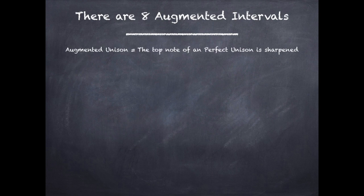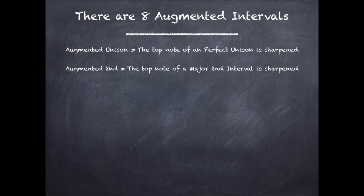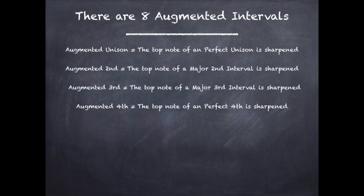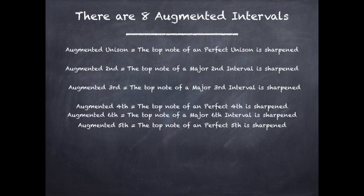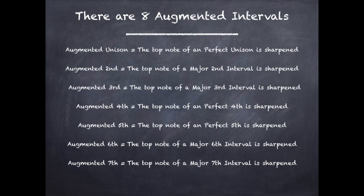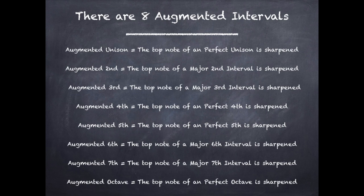An augmented unison: the top note of a perfect unison is sharpened. An augmented second: the top note of a major second is sharpened. An augmented third: the top note of a major third is sharpened. Augmented fourth: the top note of a perfect fourth is sharpened. Augmented fifth: the top note of a perfect fifth is sharpened. Augmented sixth: the top note of a major sixth is sharpened. Augmented seventh: the top note of a major seventh is sharpened. And augmented octave: the top note of a perfect octave is sharpened.